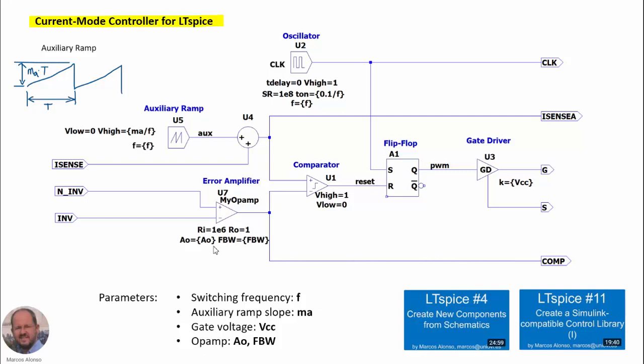So for our controller, we are going to have the following parameters: the switching frequency of the clock signal and the ramp, and the slope of the auxiliary ramp.